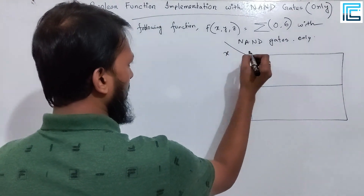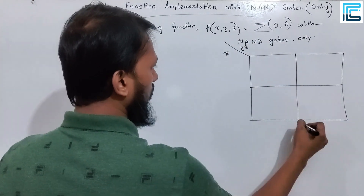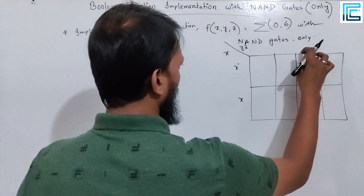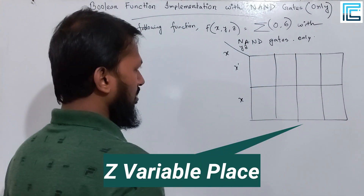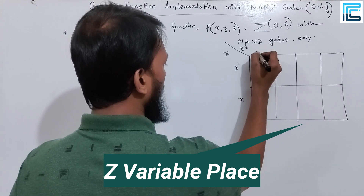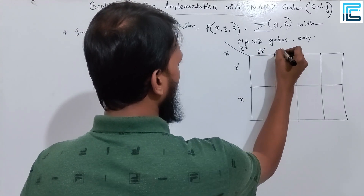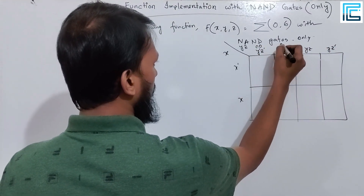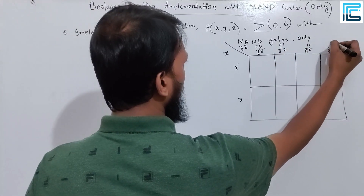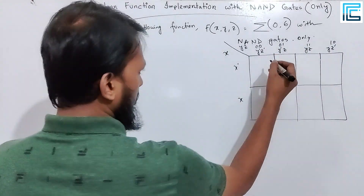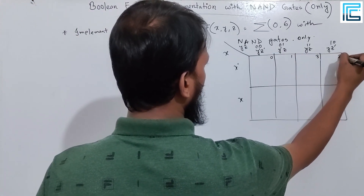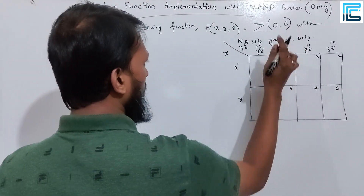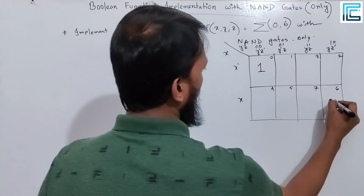We have variables x, y, and z. We need to refer to these. The function result is 1 for minterms 0, 5, and 6 — those positions where the output is 1.